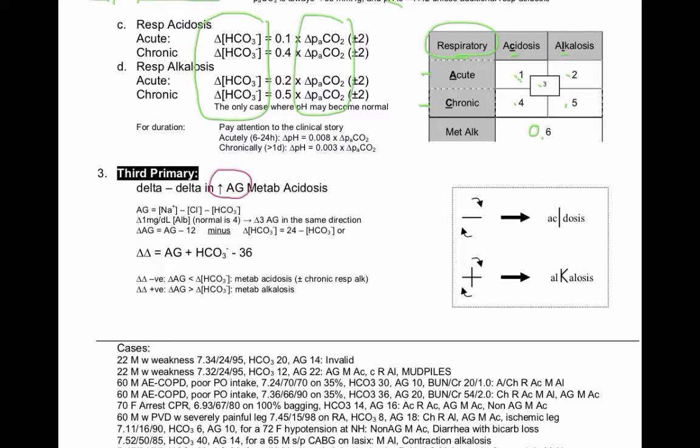In this case, the change in anion gap from normal (delta anion gap) minus the change in bicarb from normal (24 minus bicarb) will be either a negative or positive number. If it's negative and you flip it on its side and stick it at the third position in the word acidosis, it will just fit there. If it's a positive number and you flip it on its side and push it a little bit, it becomes a K. That tells you the third primary, because this is the third position in the word alkalosis, is an alkalosis.